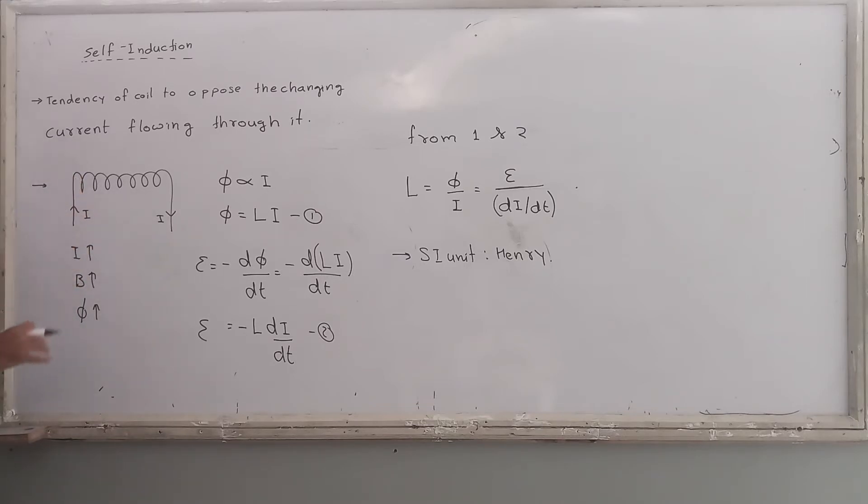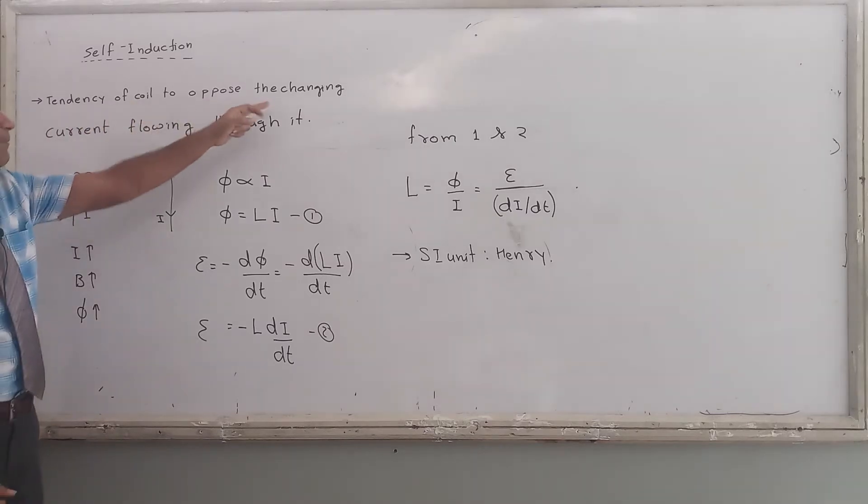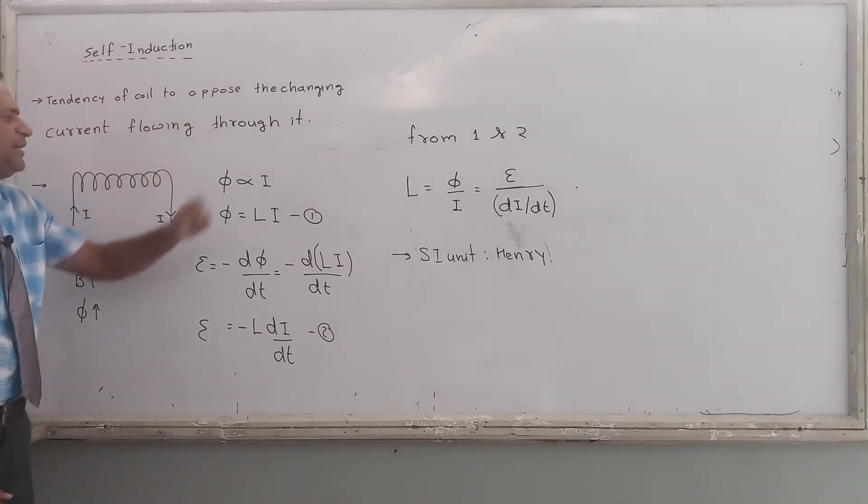What is happening over here? It develops a tendency to oppose this increase of magnetic flux. Current is flowing through this coil. Where is the induced EMF? Where will it generate? In this coil. So we call it self-induction. What is self-induction actually? The tendency of a coil to oppose the changing current flowing through it is known as self-induction.